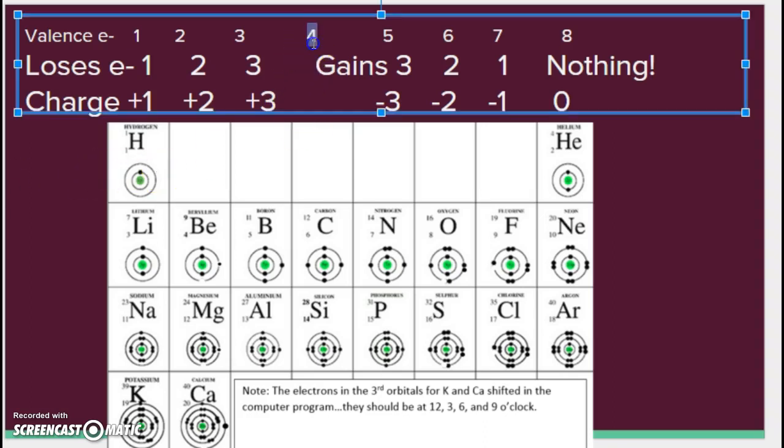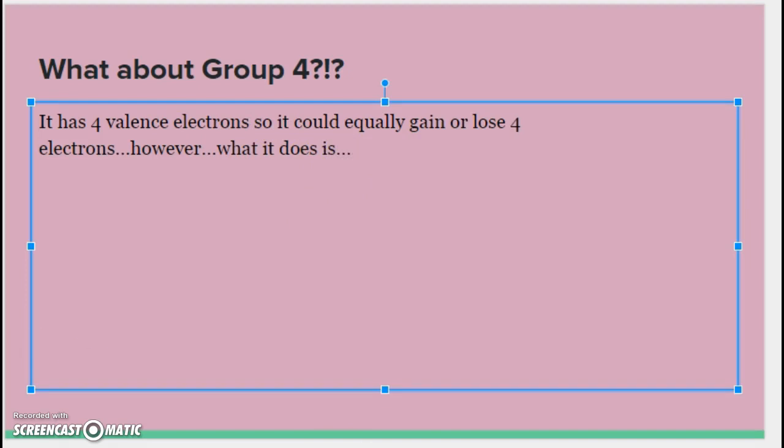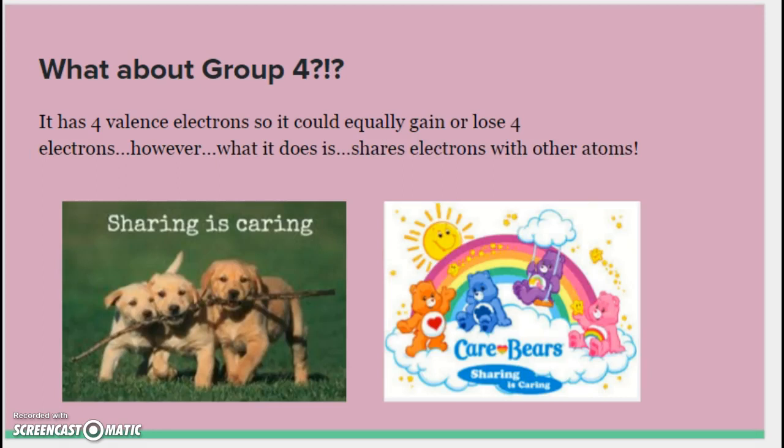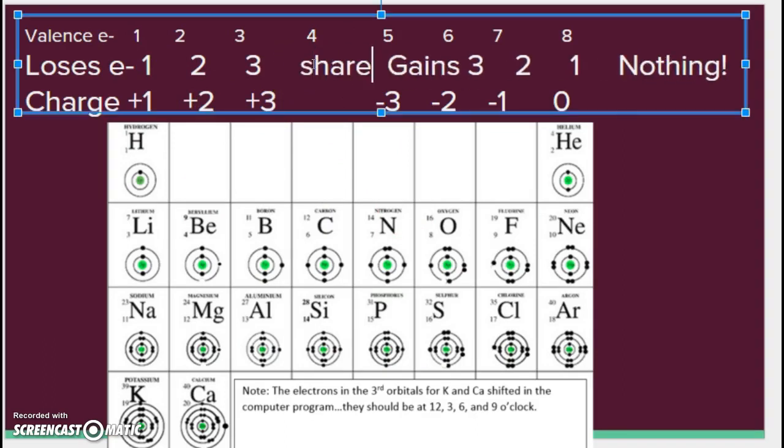Now, if you're sitting there going, wait, wait, wait. What happened to group 4? Well, group 4 is in the middle. So, 4 minus 4 is 0, well, that would work. 4 plus 4 is 8, well, that would work. So, what is it going to do? It's right in the middle. It has 4 valence electrons, so it could equally gain or lose 4 electrons. However, what it does is neither. It does not gain. It does not lose. It shares. Because sharing is caring. So, it shares electrons with other atoms. And, yep, there's a whole other lesson about that coming up later. So, group 4 is going to share. There are some other elements and atoms that are going to share, and we'll talk about that. But, for now, we've got to start with the basics. So, we have this trend. And, remember, they are going to share. Yep, you also have to say the aww at the end of sharing is caring.